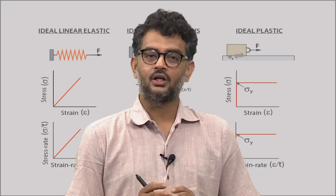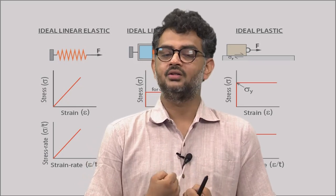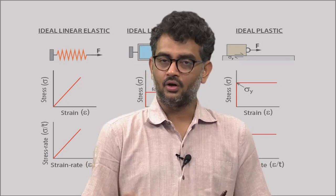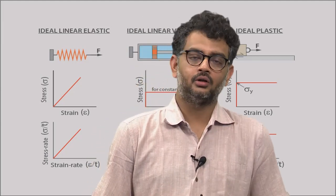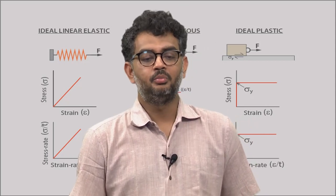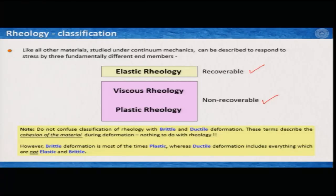Brittle and ductile do not consider the rheological part. If the cohesion is maintained, then it is ductile; if the cohesion is not maintained, then it is brittle. Very generally, brittle deformation is most of the time plastic, and ductile deformations mostly include everything which are not elastic and not brittle. But remember, brittle and ductile have nothing to do with elastic, viscous, and plastic rheology.